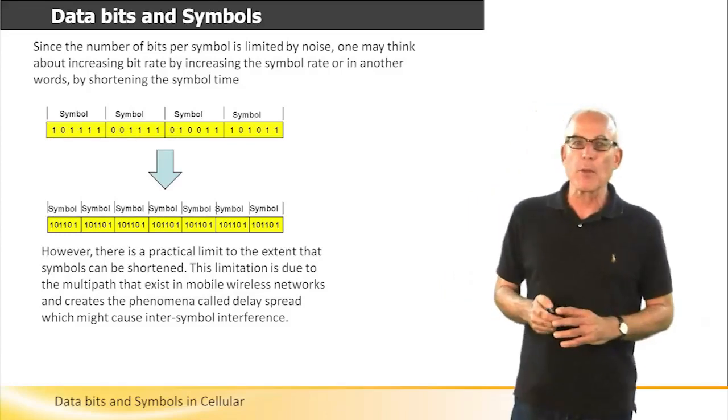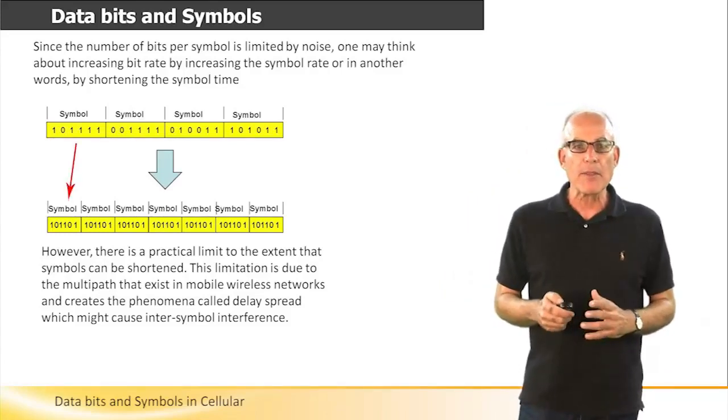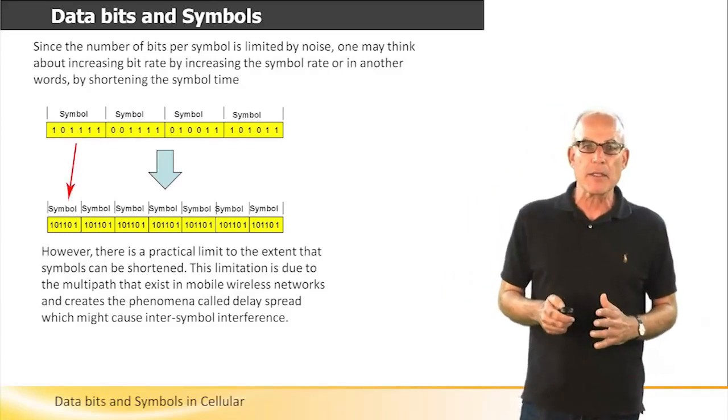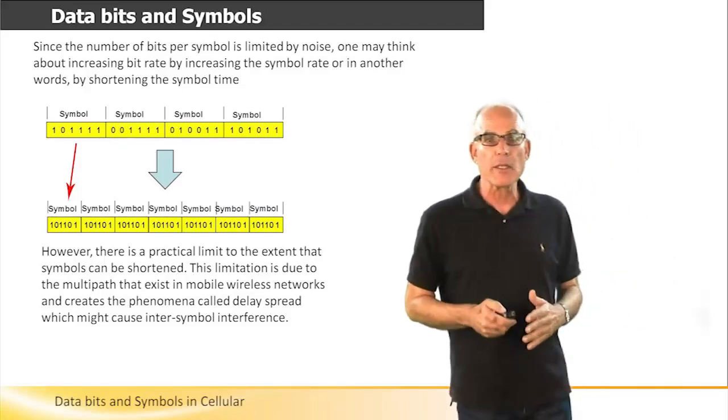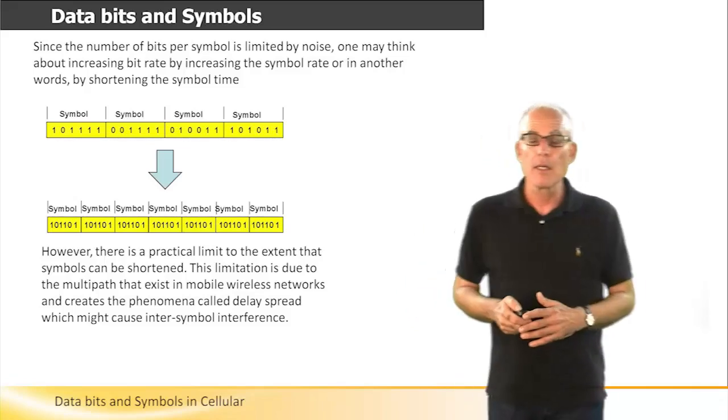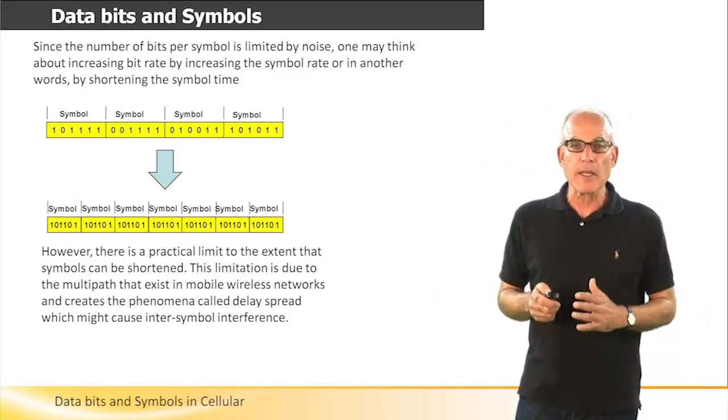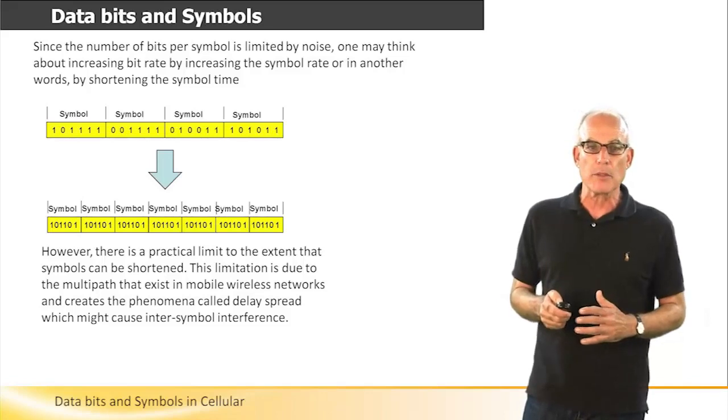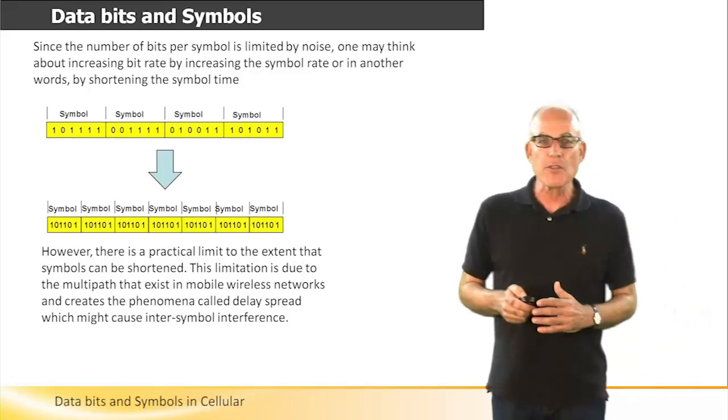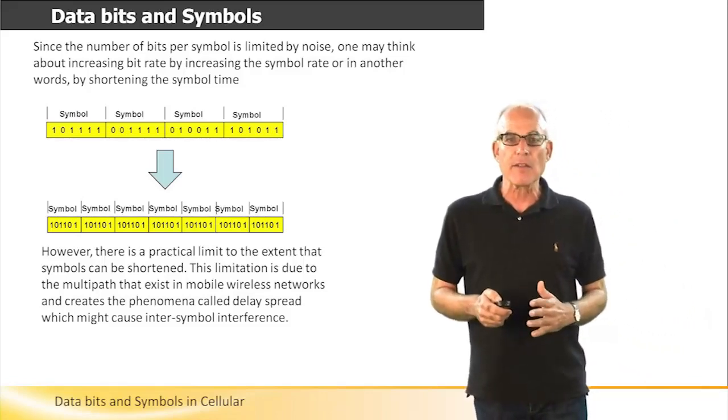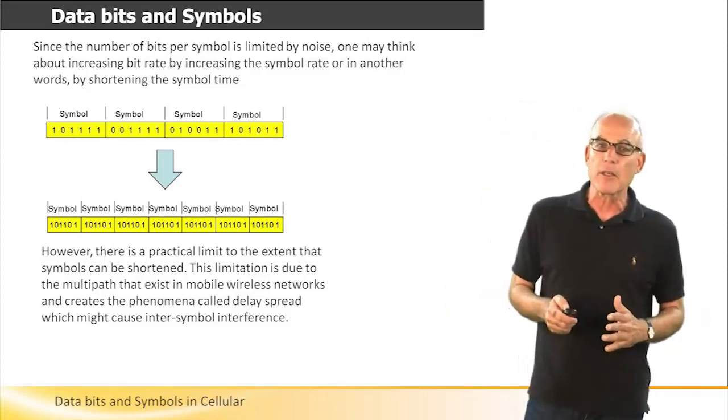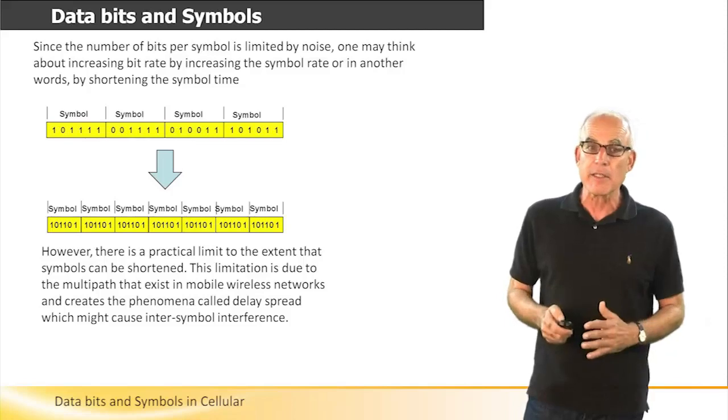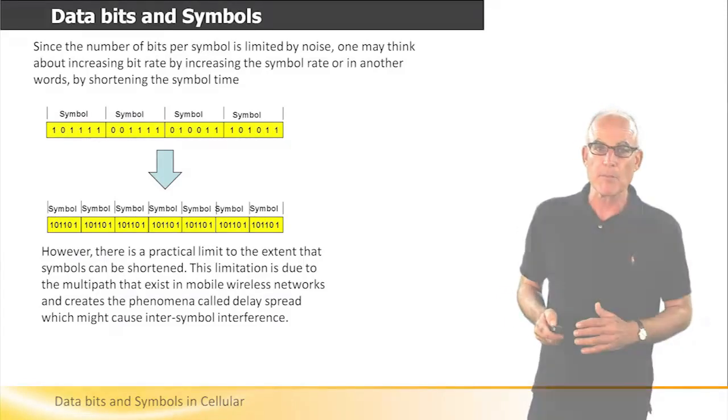Since the number of bits per symbol is limited by noise, one may think about increasing the bit rate by increasing the symbol rate, or in other words, by shortening the symbol time. However, there is a practical limit to the extent that symbols can be shortened. This limitation is due to the multipath that exists in mobile wireless networks and creates a phenomena called delay spread, which may cause inter-symbol interference.